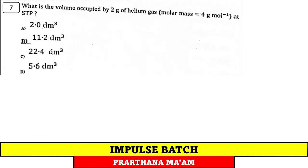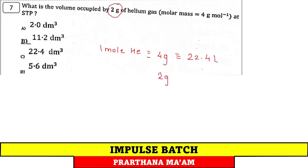Question 7: What is the volume occupied by 2 g of helium (molar mass 4) at STP? 1 mol He = 4 g = 22.4 L. For 2 g: volume = 22.4 × 2/4 = 11.2 L. Option B.